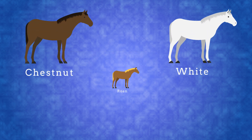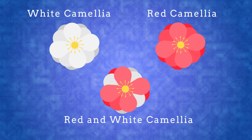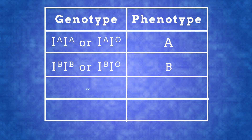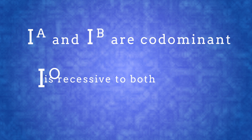Co-dominance is seen throughout the animal kingdom, in plants, and also in our blood groups. There are four groups: A, B, AB, and O. There are three possible alleles for blood groups, but we each only have two of them — one from our mother and one from our father. IA and IB are co-dominant, while IO is recessive to both IA and IB.